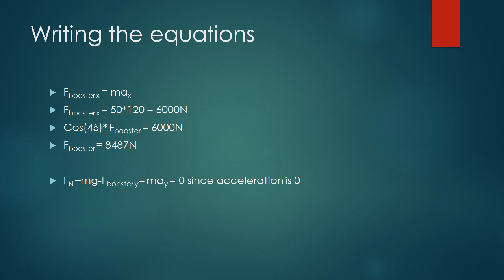Now, let's look at how to solve this problem. We only need to care about the horizontal direction, because we know that the acceleration equates to zero on the vertical, because it's not accelerating up or down on the surface, right? Let's look at the X direction. We can see that the F booster X would equal to mass times the acceleration in the X direction. With the booster X, we got 50 kilograms times 120 meters per second squared, which would equate to 6000 newtons. And that's only at the X direction.